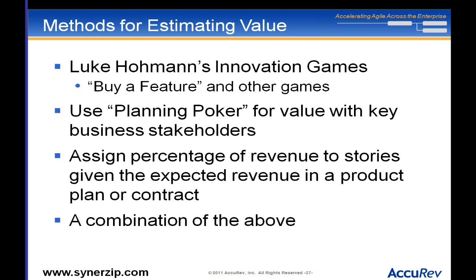That approach gives you relative value, and having relative value is much better than not being able to distinguish between two things. Use planning poker if you're not familiar with it — that's something agile teams often use to estimate cost, but it can also be used by business stakeholders to estimate value. One person may say, 'That's three points of value,' another might say one, and now you have a discussion: 'Why three?' 'Well, I was just talking to these customers and the competition is coming out with this.'